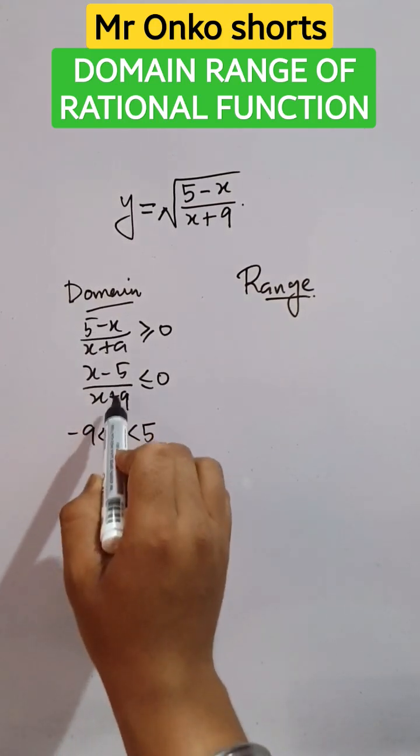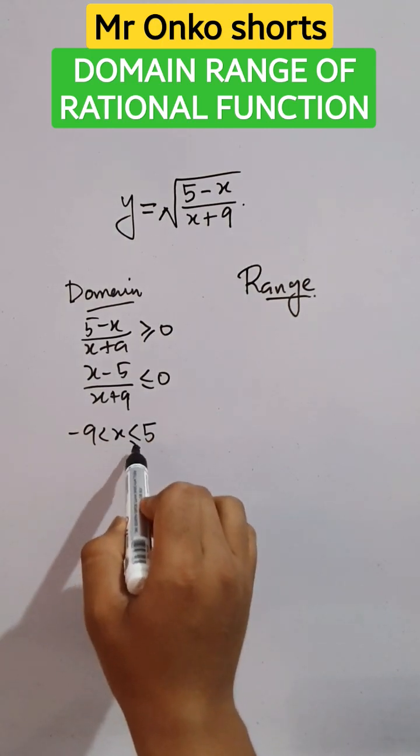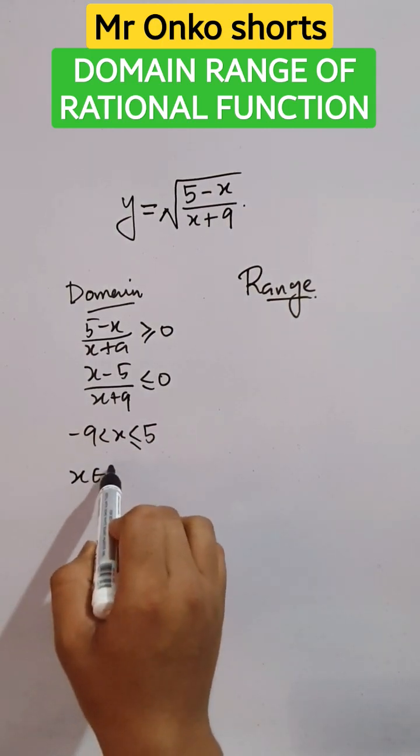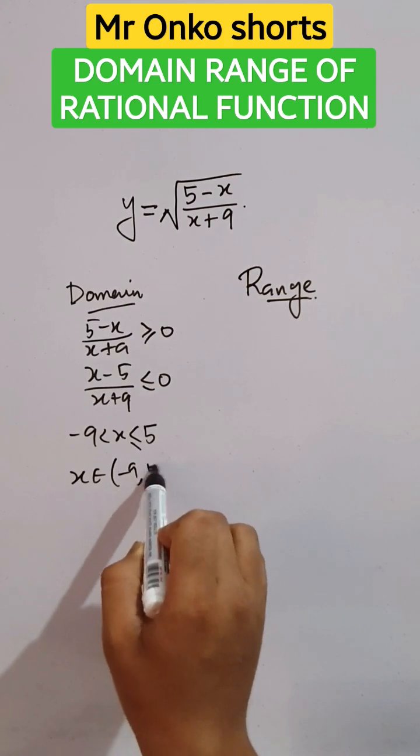Now here x plus nine can't be equal to zero, so this equal to will hold here. So the domain will be x belongs to open minus nine to closed five.